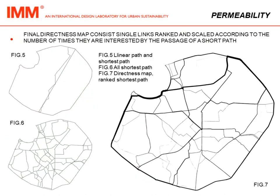The final directness map consists of single links ranked and scaled according to the number of times they are crossed by a shortest path. The darker and thicker a link is, the higher the probability of being crossed when walking between two points in the most direct way.